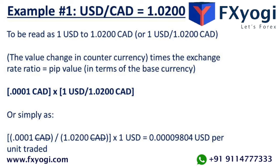The value change in counter currency times the exchange rate ratio equals the pip value in terms of the base currency. That is: 0.0001 CAD ÷ (1 USD / 1.0200 CAD), which calculates to 0.00000980 USD per unit traded.